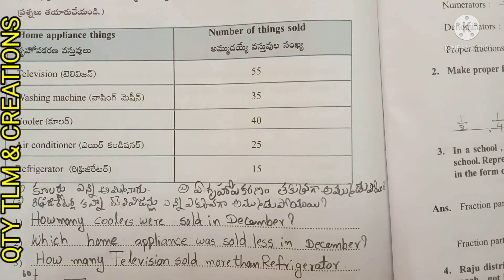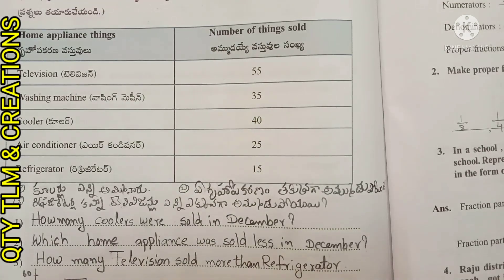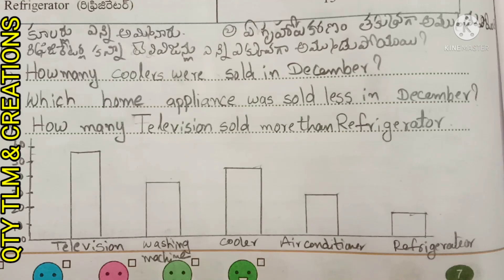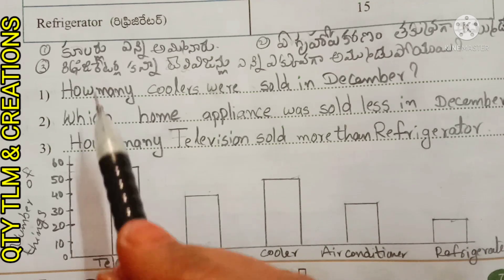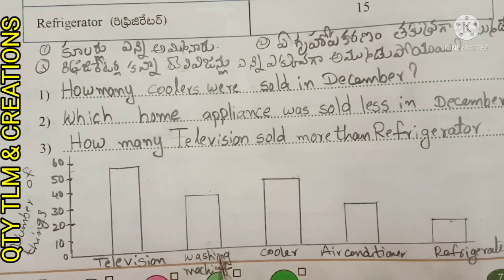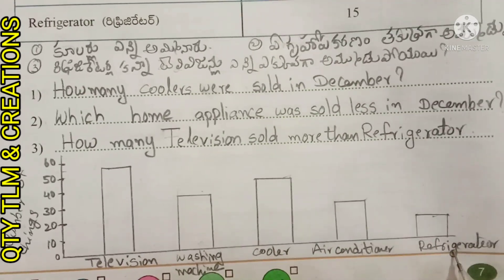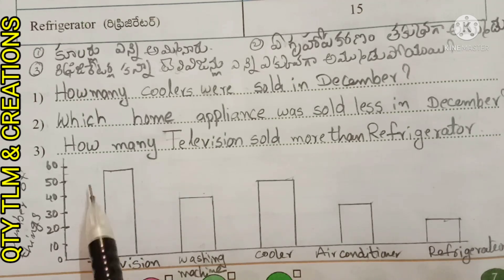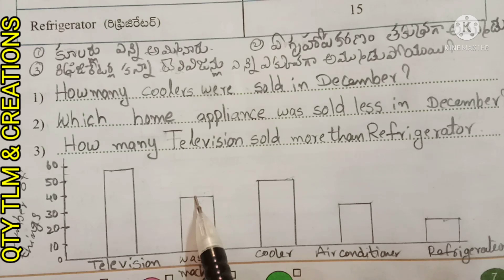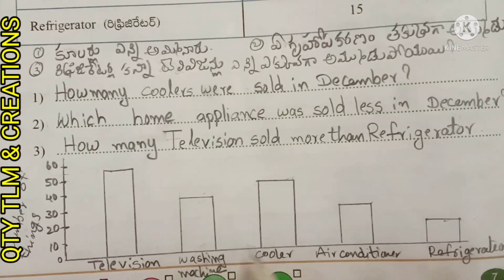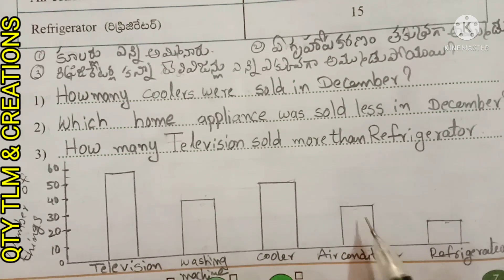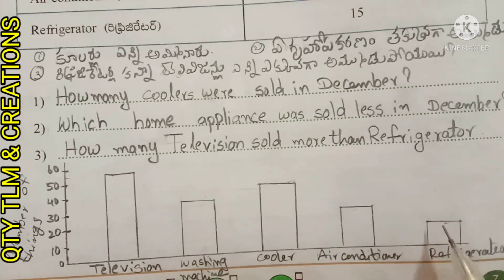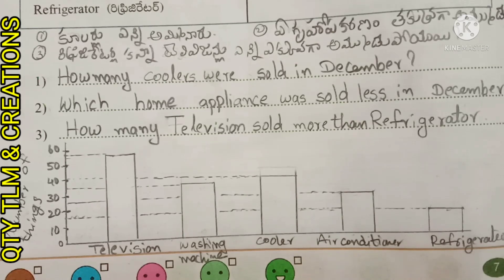Questions: First question: how many coolers were sold in December? Second question: which home appliance was sold least in December? Third question: how many more televisions were sold than refrigerators? In the bar graph, vertical line shows number of things and horizontal line shows home appliances. We will continue other topics in another video. Until then, bye, thank you!